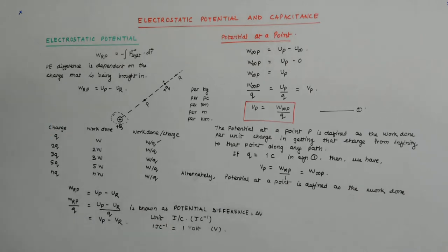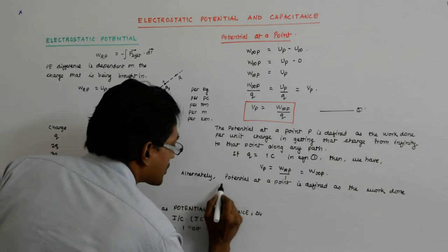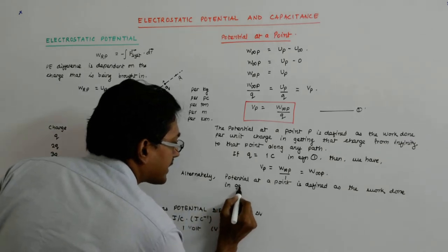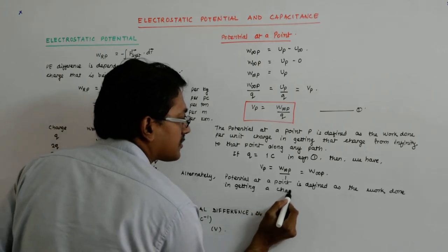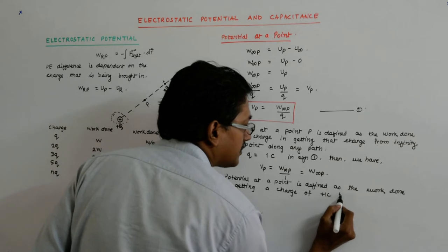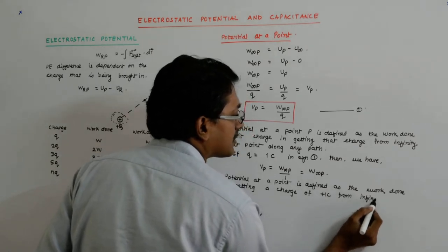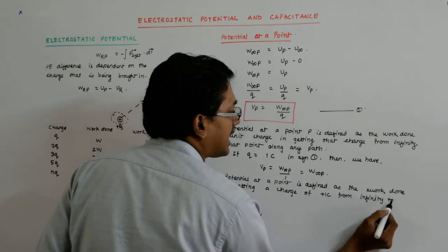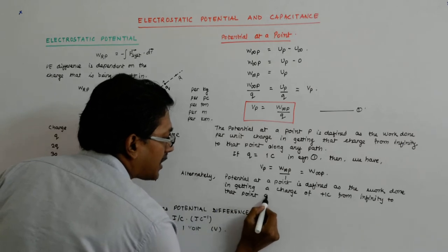So it is defined as the work done in getting a charge of plus one coulomb from infinity to that point along any path.